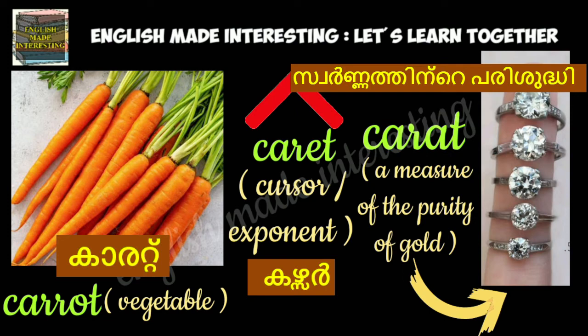Carrot. C-A-R-R-O-T is a vegetable. C-A-R-E-T, 'caret', refers to a cursor or an exponent. C-A-R-A-T, 'carat', which means a measure of the purity of gold.